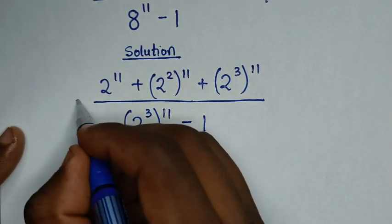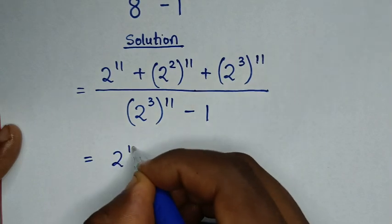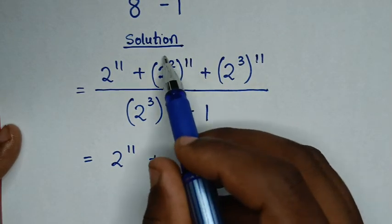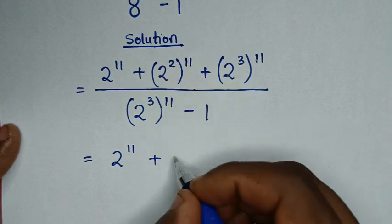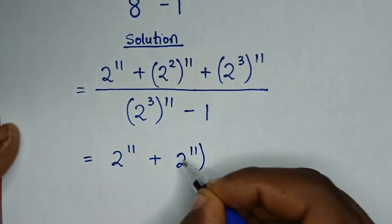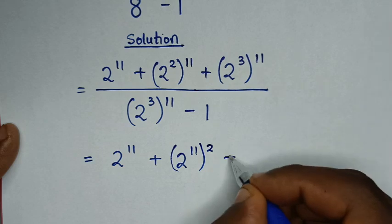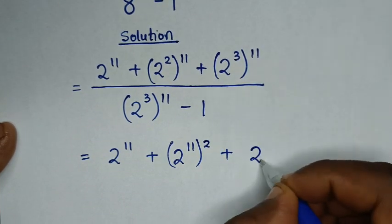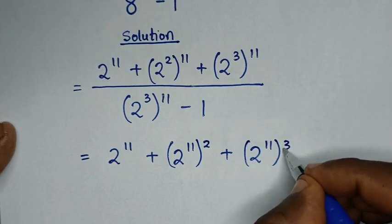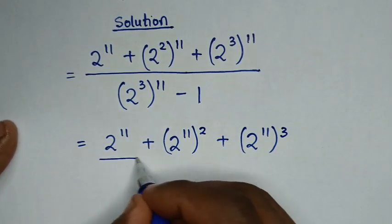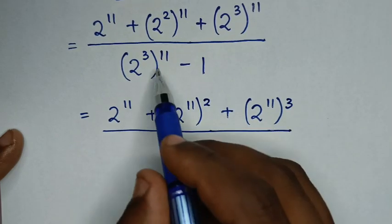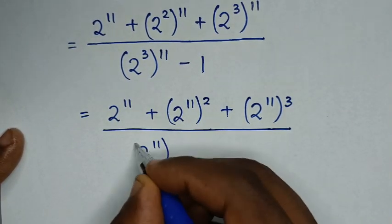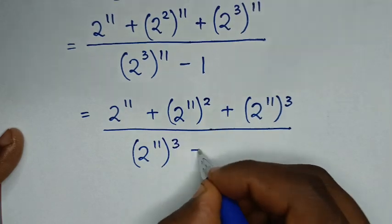In the next step, it will be equal to 2 power 11, plus — we make 2 power 11 common, taking the 11 inside and the power 2 outside — so it will be 2 power 11 bracket power 2, plus 2 power 11 bracket power 3, then over 2 power 11 bracket power 3, minus 1.